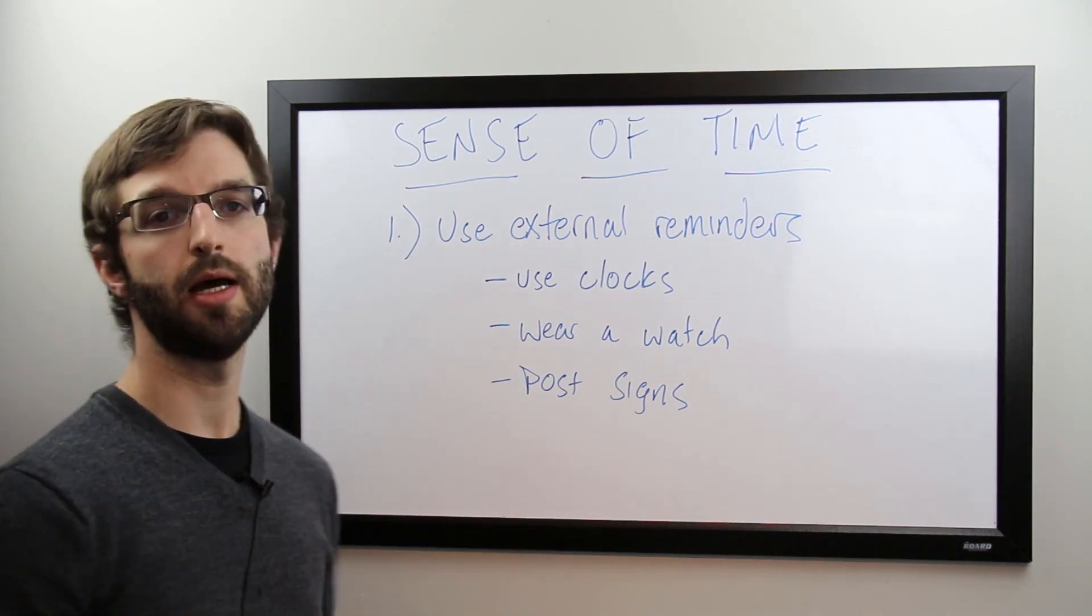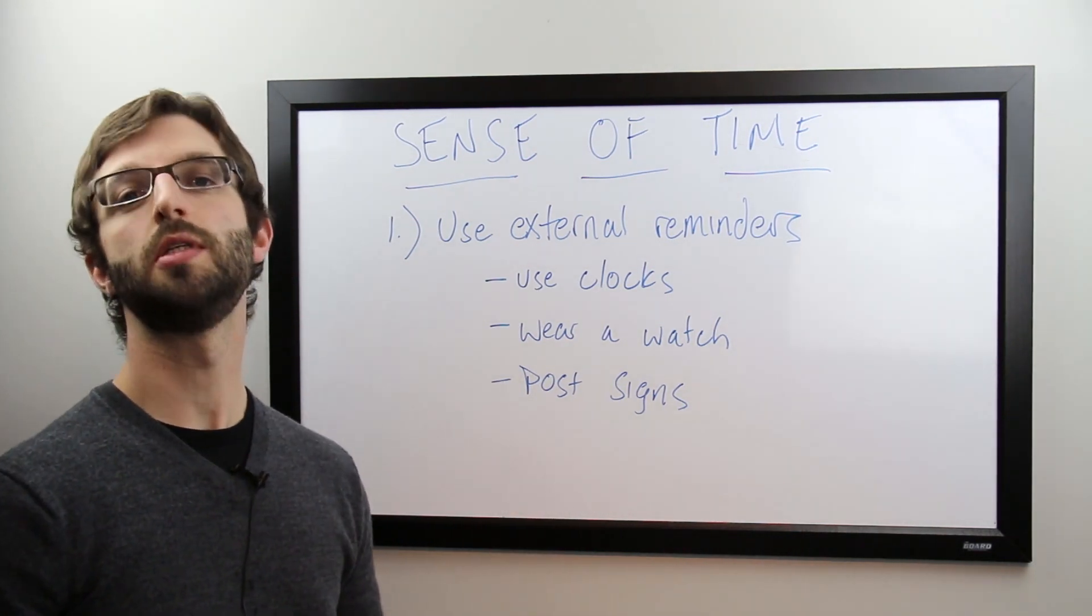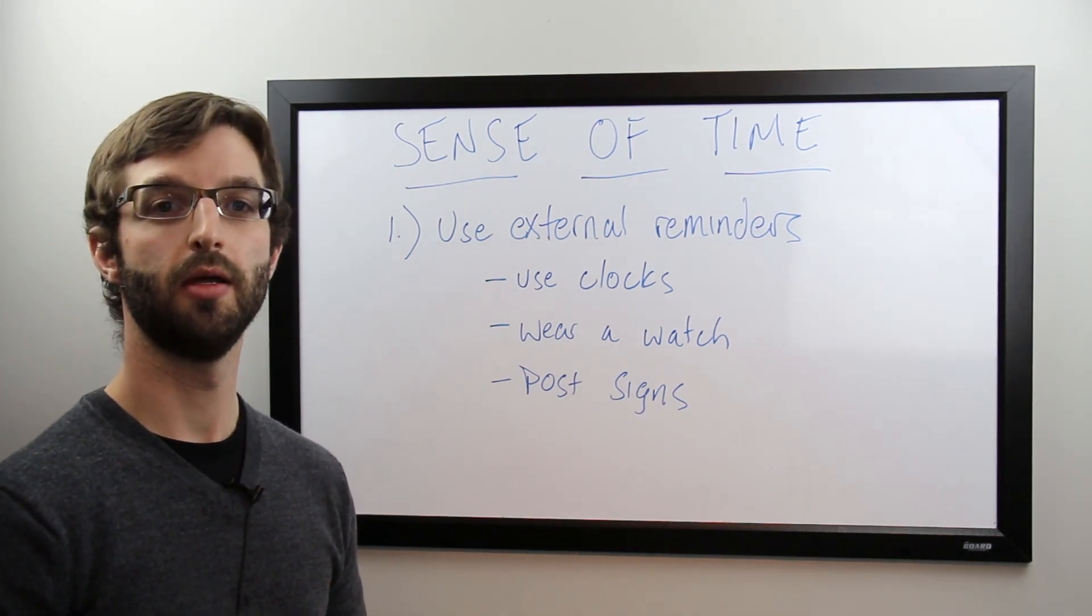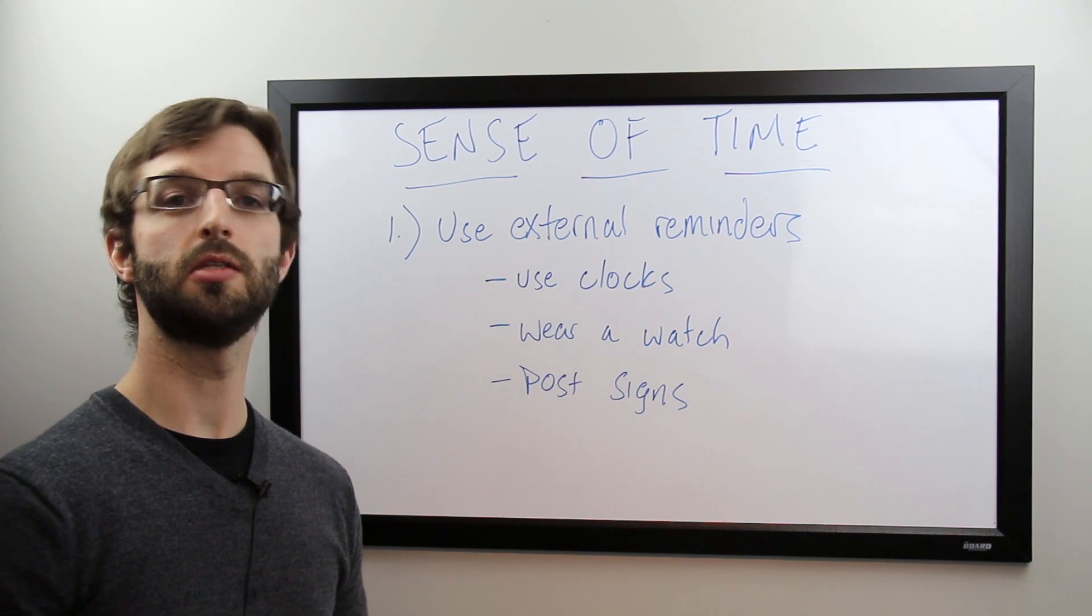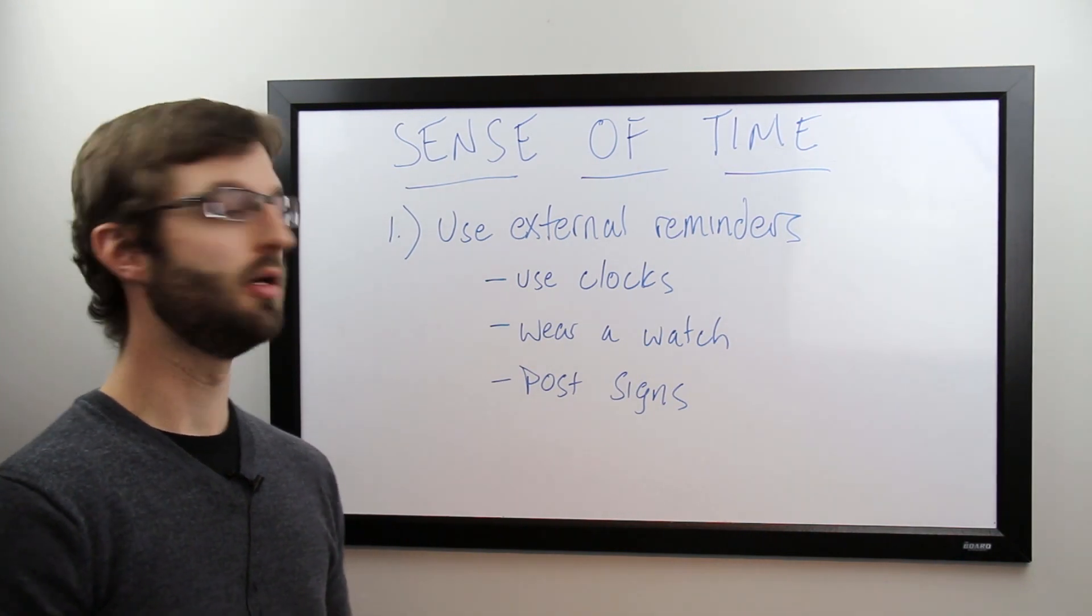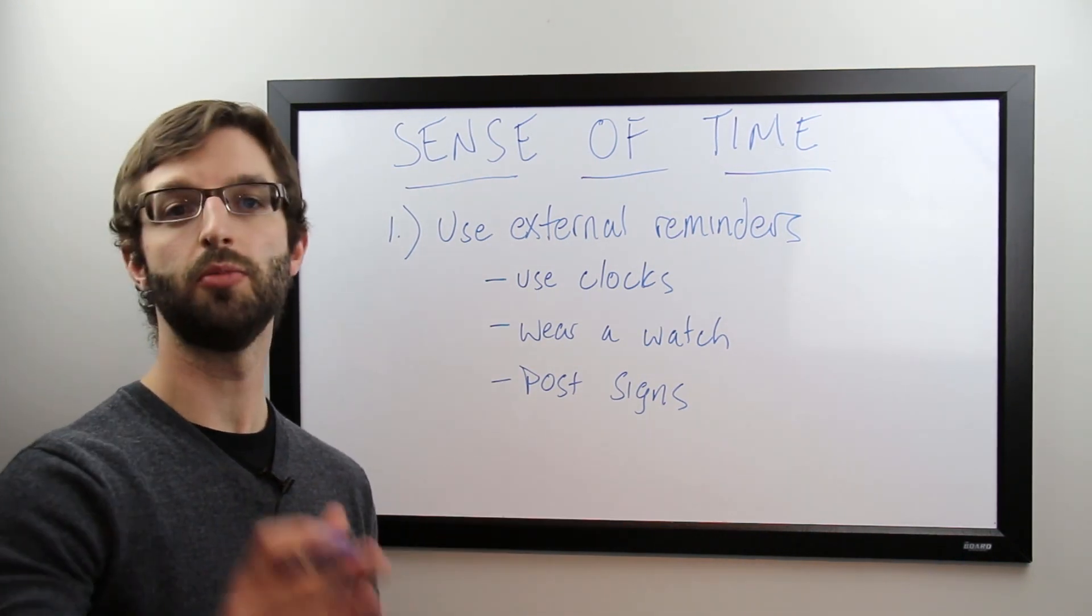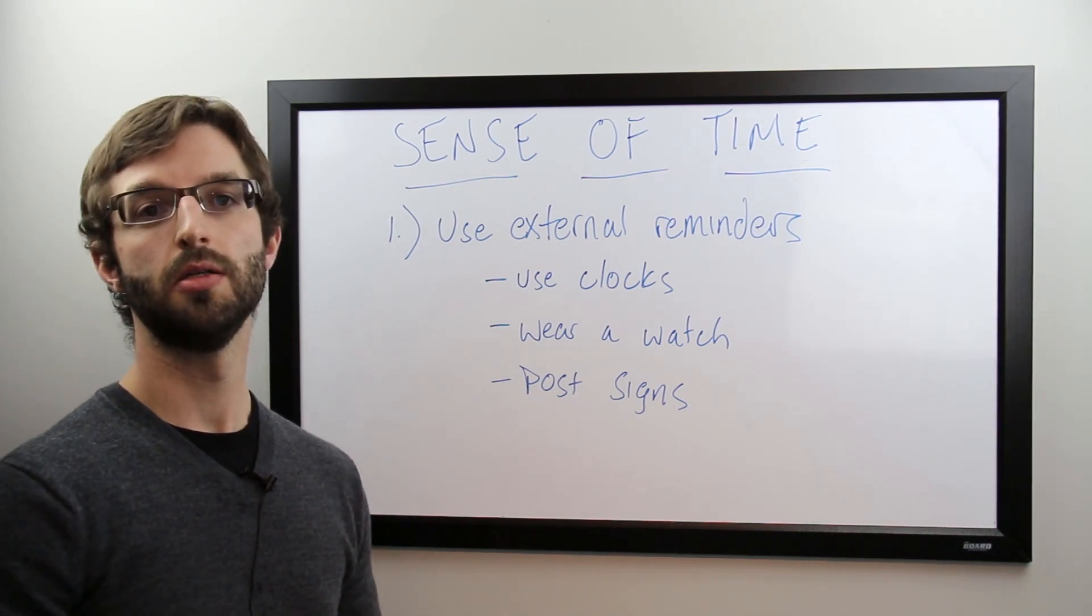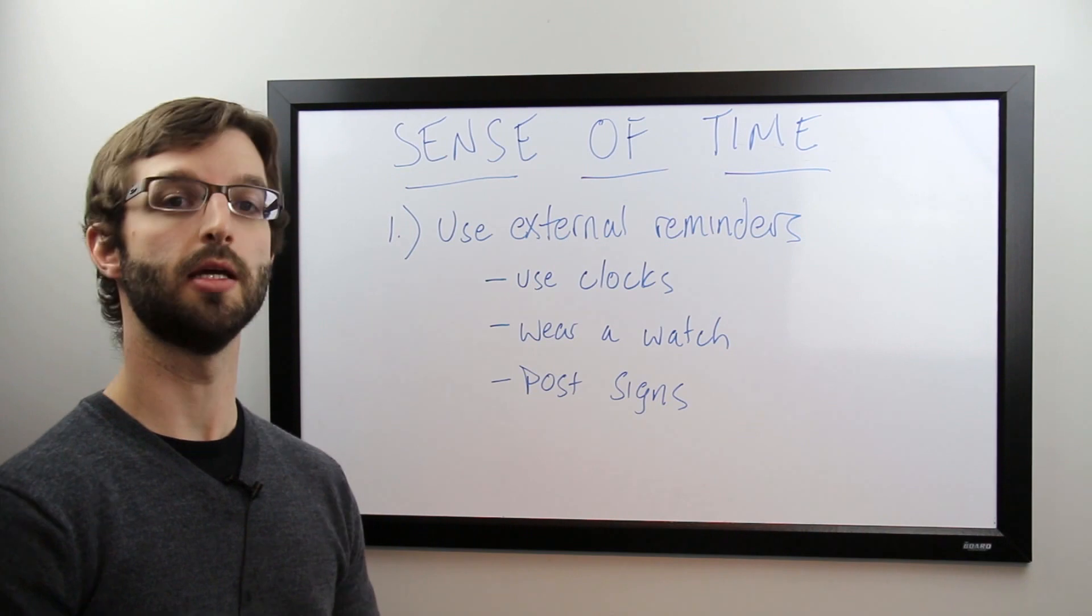Finally, post signs. There's a lot of routines that we tend to struggle with and fall behind in, a big one getting ready for school, getting out of the house on time. Time yourself. If you know that you need to be eating breakfast by 8:15, put a sign in your bedroom that says time to eat breakfast, put a sign in the kitchen that says 9 o'clock, get out the door, so you can kind of keep track of your daily progress and stay on track.